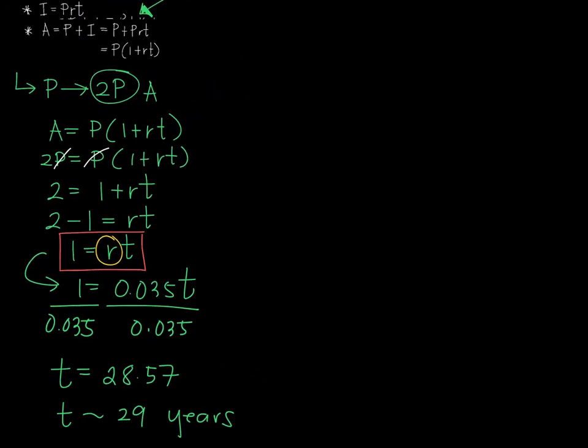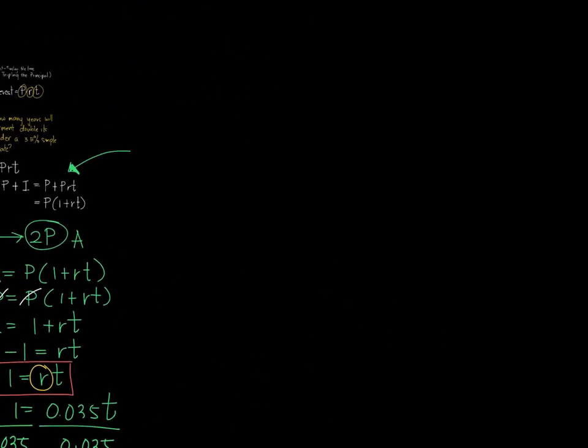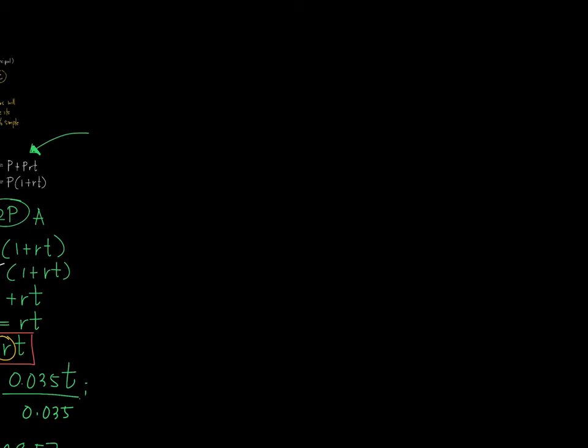So an immediate follow-up to this would be, what if the rate is changed into 6.25% simple interest. And you want to find any principal amount to double its value. So for how long will it take for that P to become 2P?